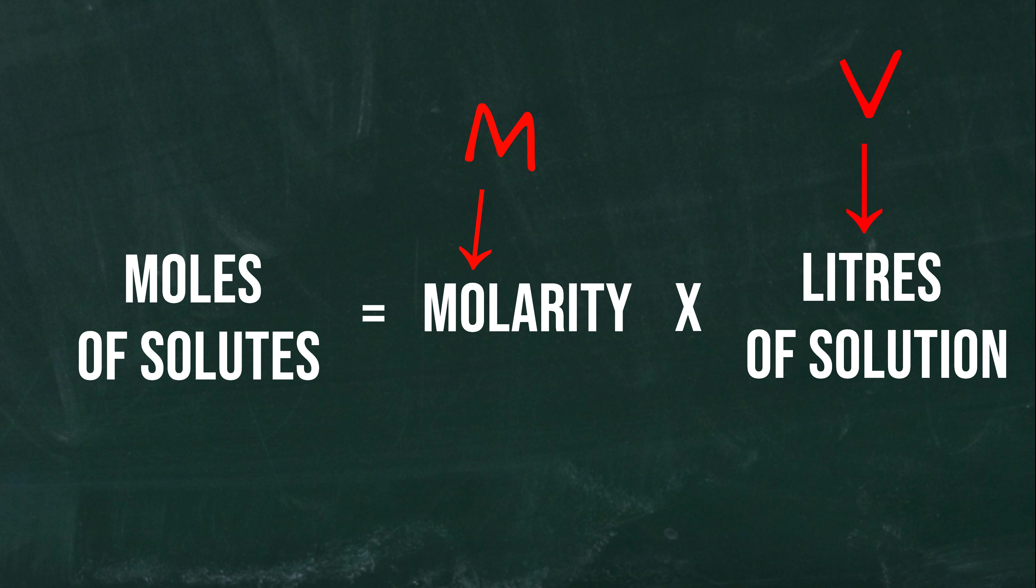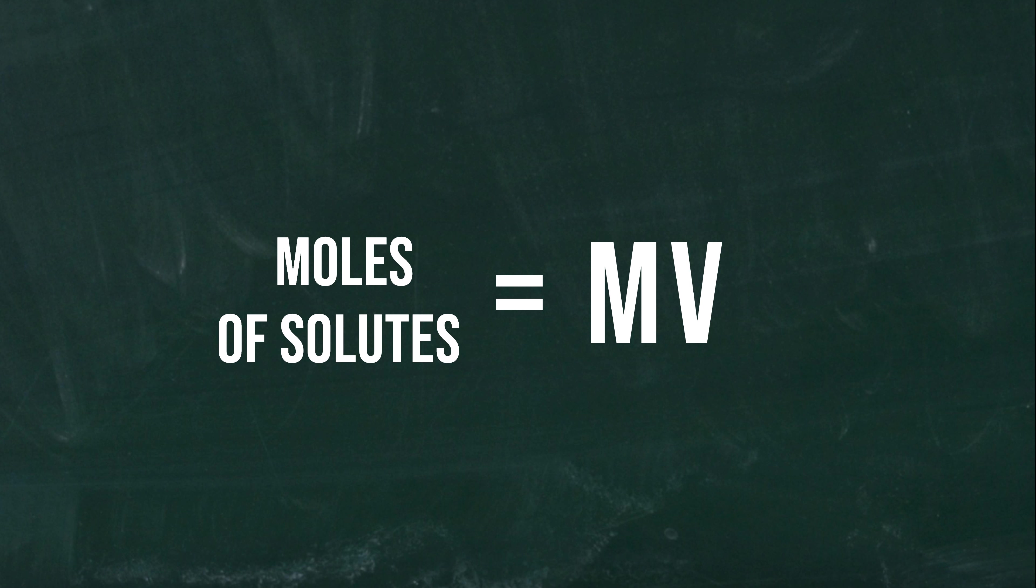Now, the equation becomes the following. Mols of solute is equal to MV. Since the moles of solute does not change before and after the dilution process, the product MV must stay the same before and after the dilution.